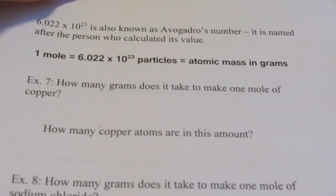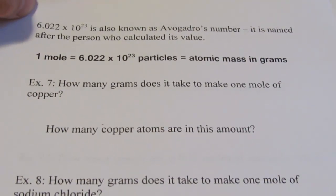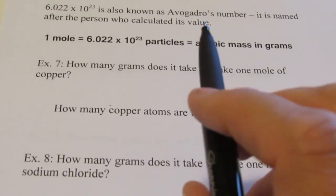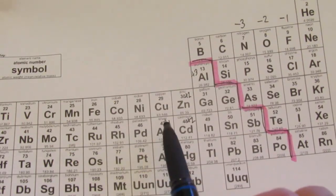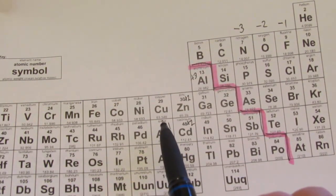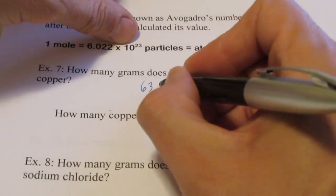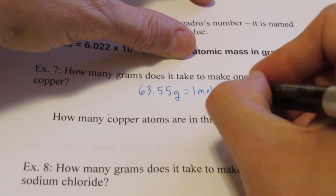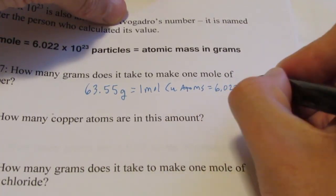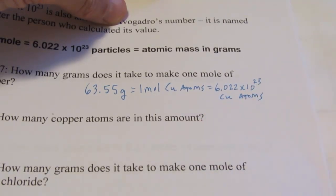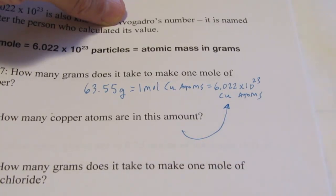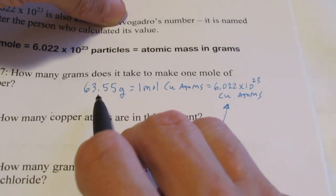Let's do a couple of examples. How many grams does it take to make one mole of copper? Copper on the periodic table is 63.546, so we'll say 63.55 grams gives me one mole of copper atoms, or 6.022 times 10 to the 23rd copper atoms. That's the atomic mass of copper in grams — and if I have its atomic mass in grams, I have Avogadro's number of atoms.